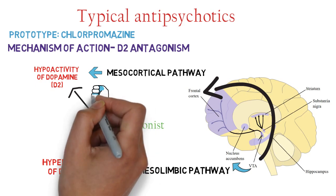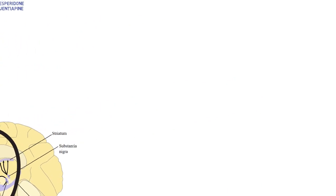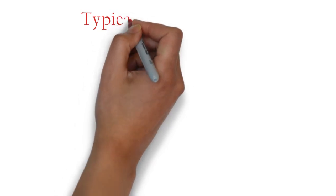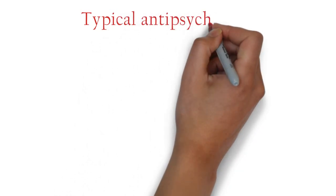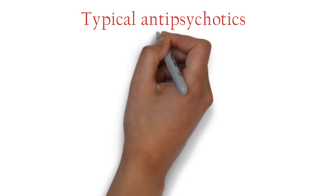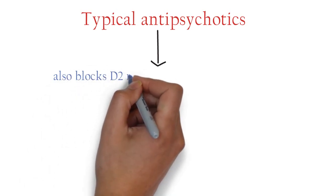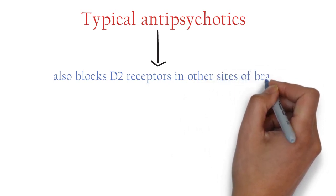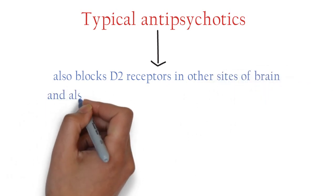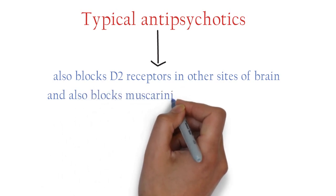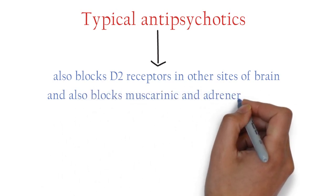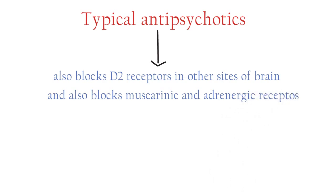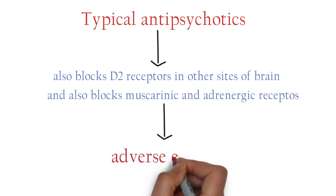The typical antipsychotics block D2 receptors not only in the mesolimbic and mesocortical pathways but also in other dopamine pathways throughout the brain. In addition, they block muscarinic receptors of acetylcholine and alpha-adrenergic receptors, which accounts for the off-site adverse effects of typical antipsychotics.